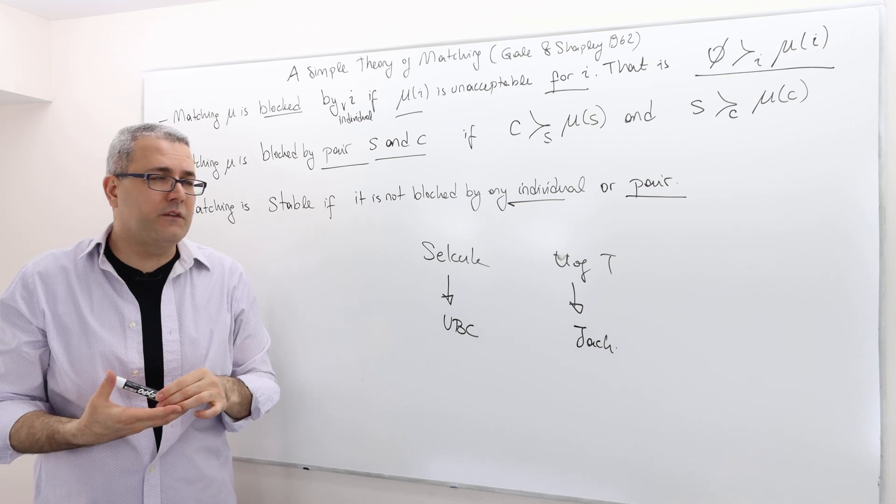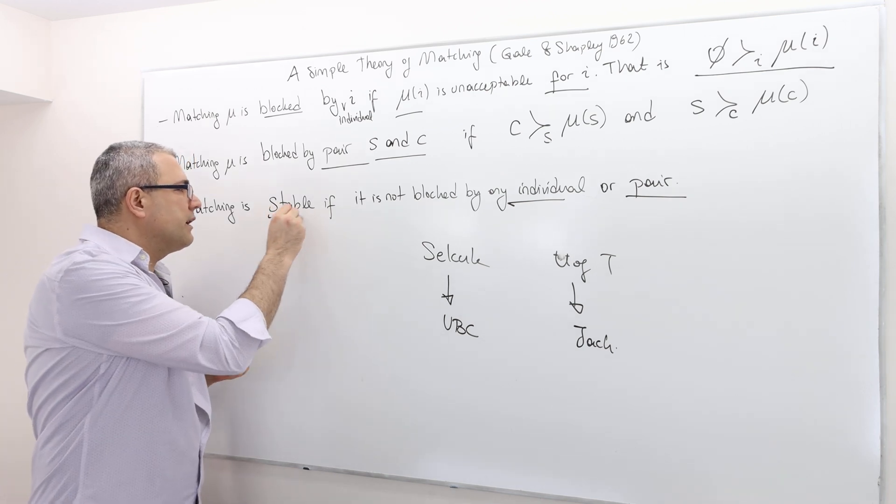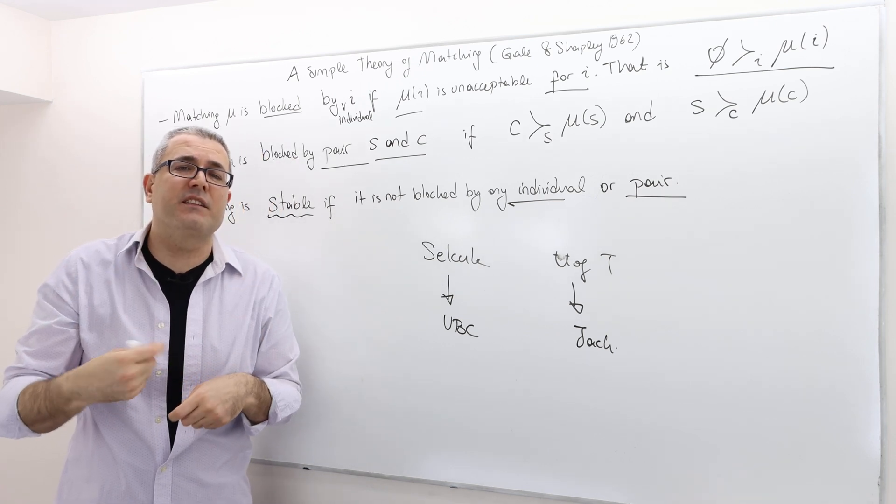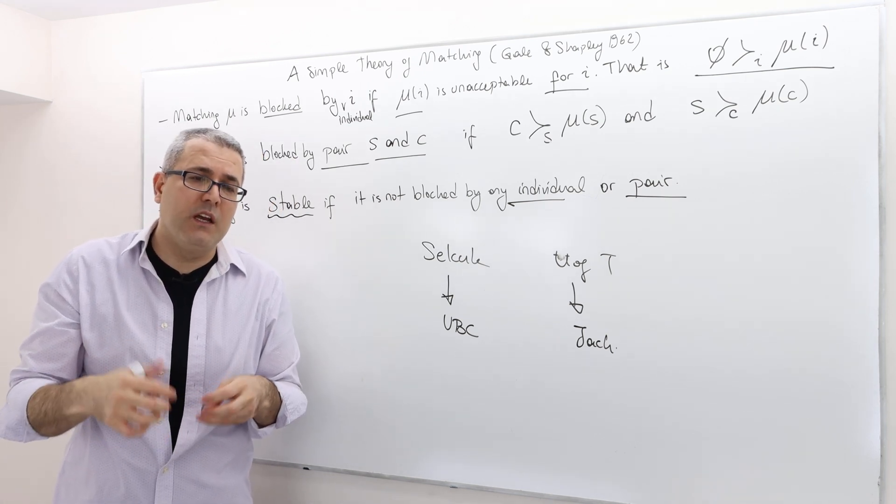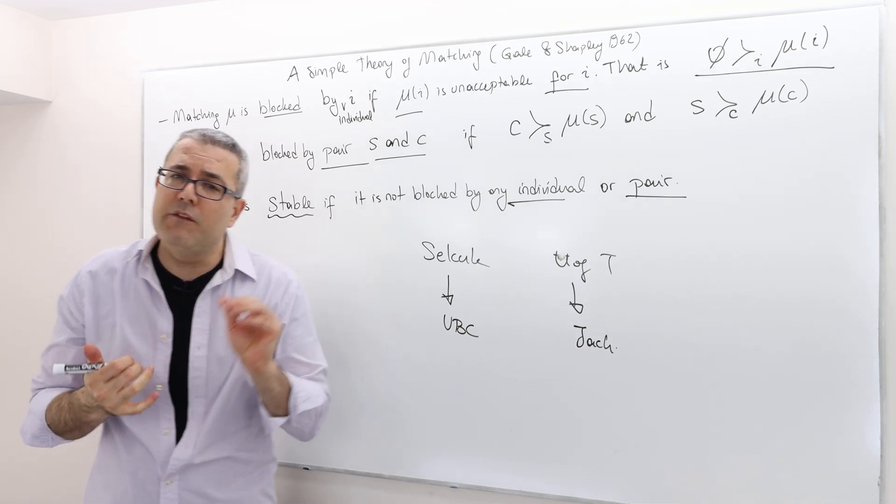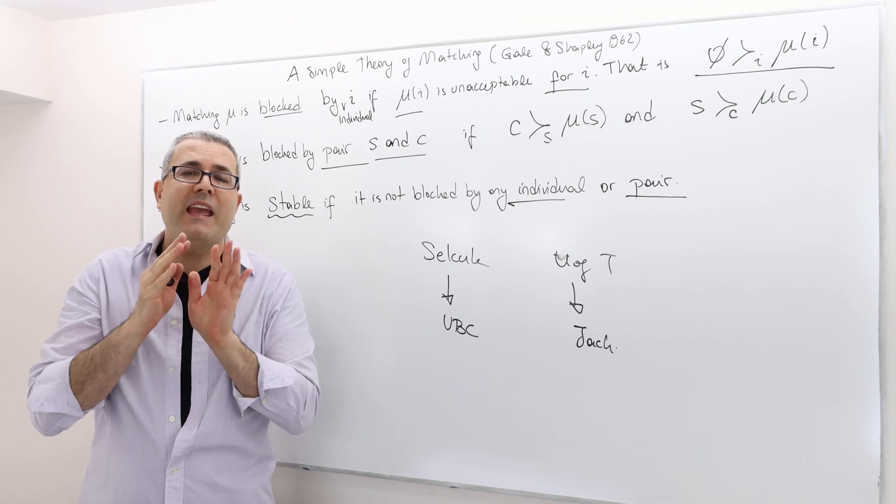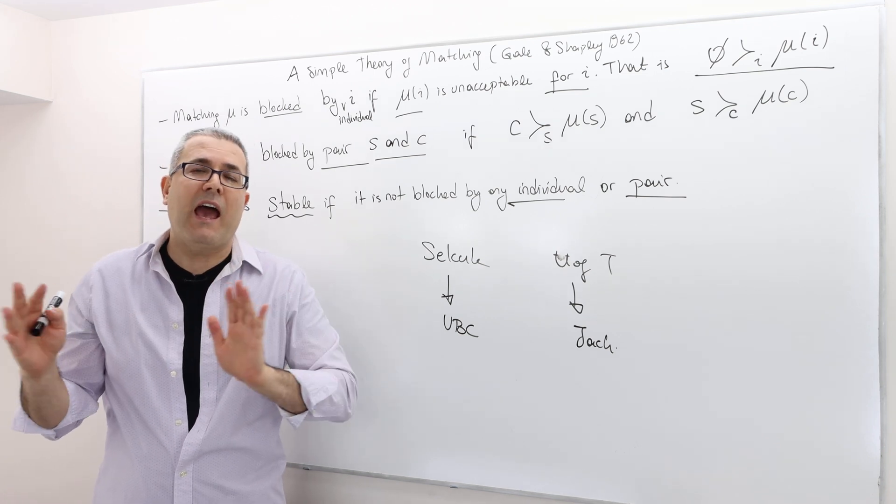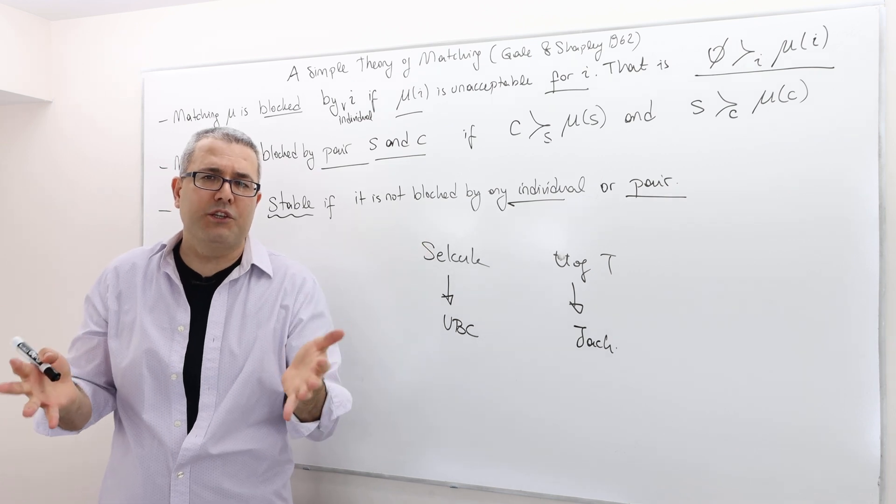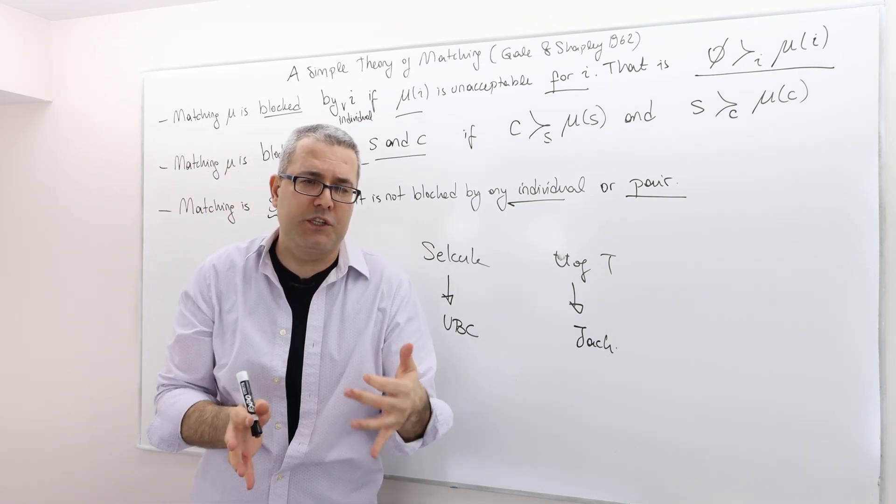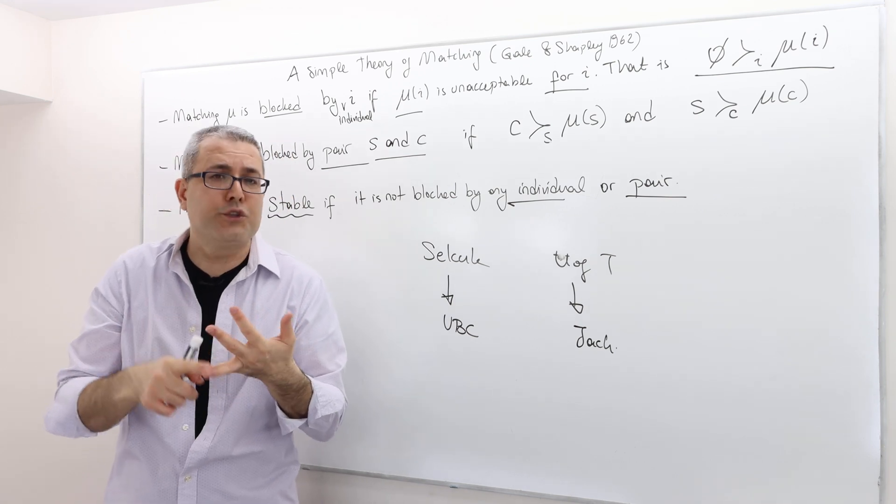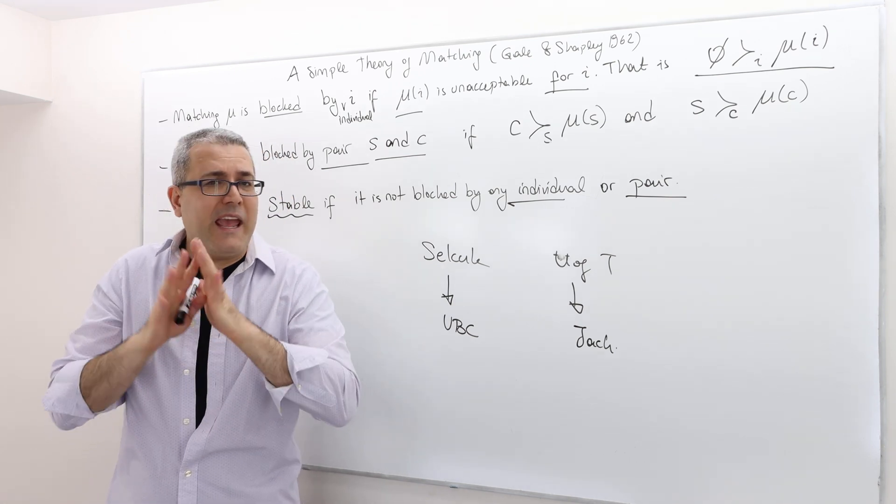So here, as you may have noticed, the concept of stability is very weak in comparison to the standard stability concept we used in cooperative game theory. Why? Because the stability, if you remember, talks about any coalition has no incentive to break the promised coalition and form their sub-coalition. So it doesn't talk about coalition of size one or two or three, it could be any coalition.